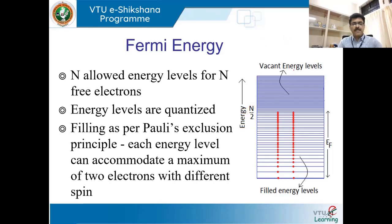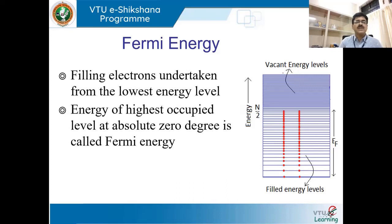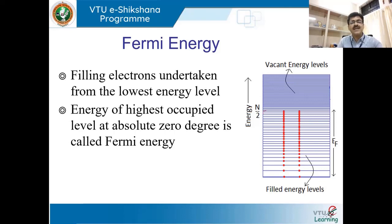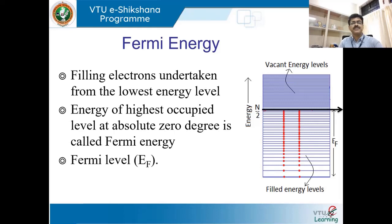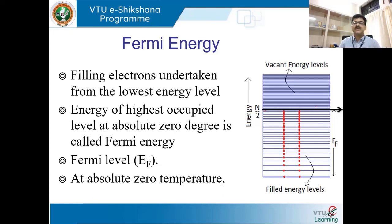As electrons are filled from the lowest energy level upward, the electron at the lowest level has the least energy and energy increases going up. Filling continues up to N/2 levels. The highest occupied energy level is what we call the Fermi energy, represented as E_F. Fermi energy is the highest occupied energy level of the electron at absolute zero Kelvin, and it plays a very significant role in explaining the conductivity of metals.